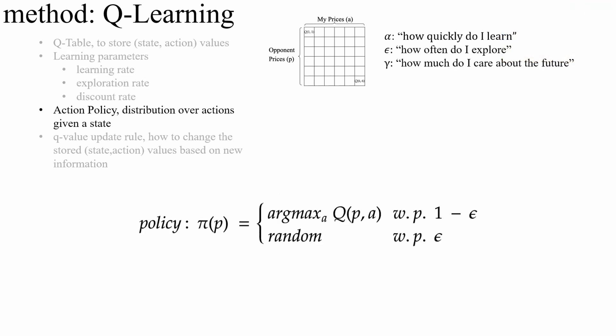We have this decision policy, an action policy, where we see the exploration rate appear. And this basically is where we see how the exploration rate works. With the probability one minus epsilon, we do what we think is best, given the opponent's price. But with the probability epsilon, we do something random, so that's where we explore. So epsilon is the probability that we explore and do something completely random.